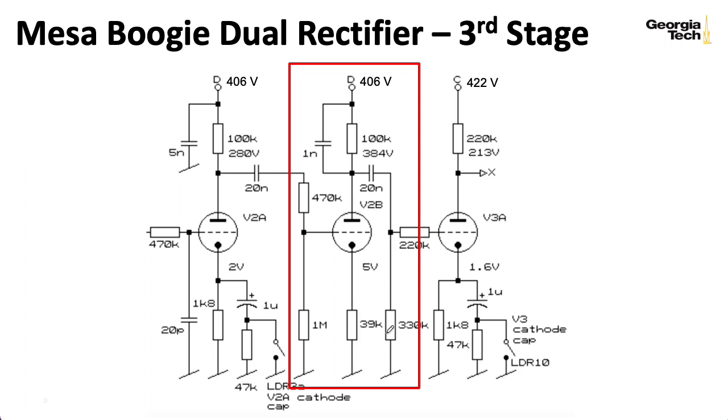And this cathode capacitor, 39k, that's huge. That's way bigger than you would have in a standard common cathode stage. So we already know that something interesting and weird is happening with this stage.